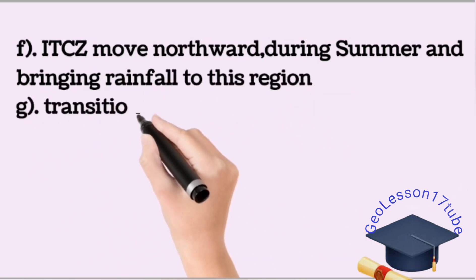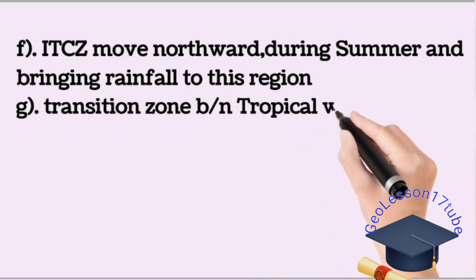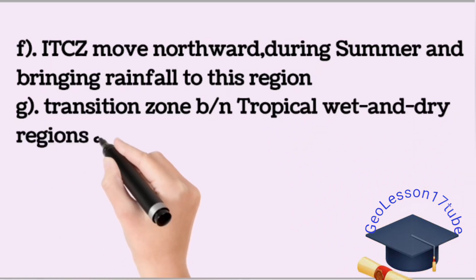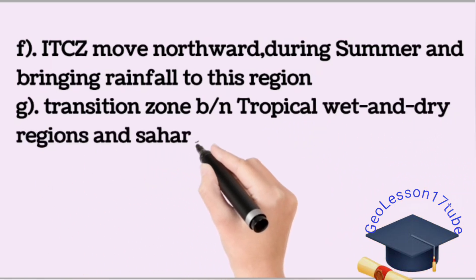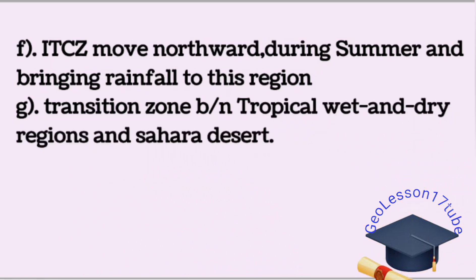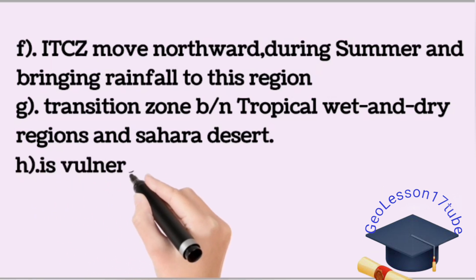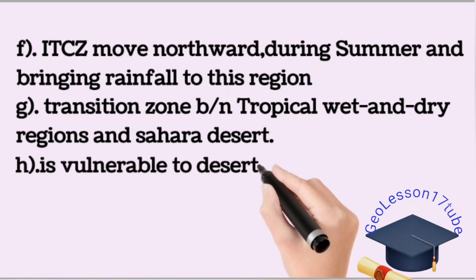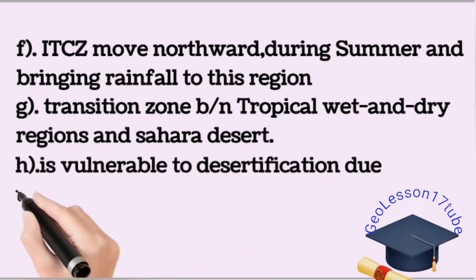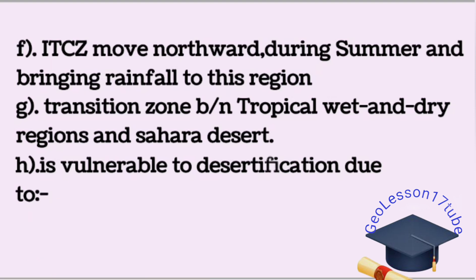The semi-arid climate region serves as a transitional zone between the tropical wet and dry region and the Sahara Desert. The Kalahari Desert also experiences this type of climate condition. The semi-arid climate region is vulnerable to desertification due to grazing and limited rainfall.